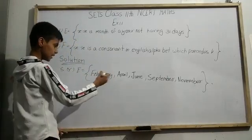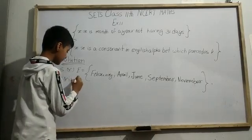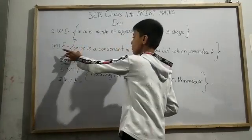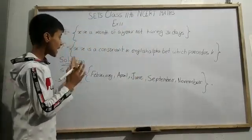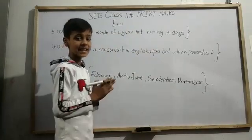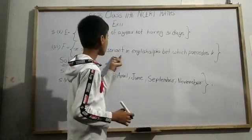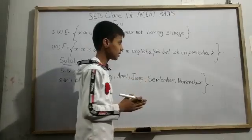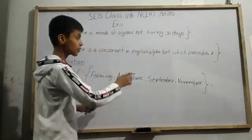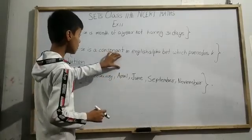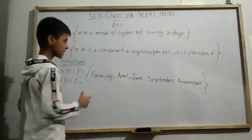Next is question number 6. Here we have a set F given as: F = {x : x is a consonant in the English alphabet which precedes k}. The question is telling us that all elements in set F are consonants in the English alphabet which come before k — that is, 'precedes' means 'before'. So whichever consonants come before the letter k are our elements.